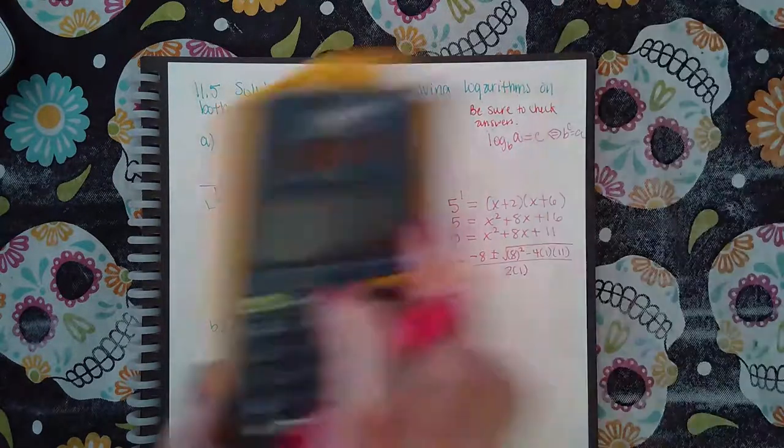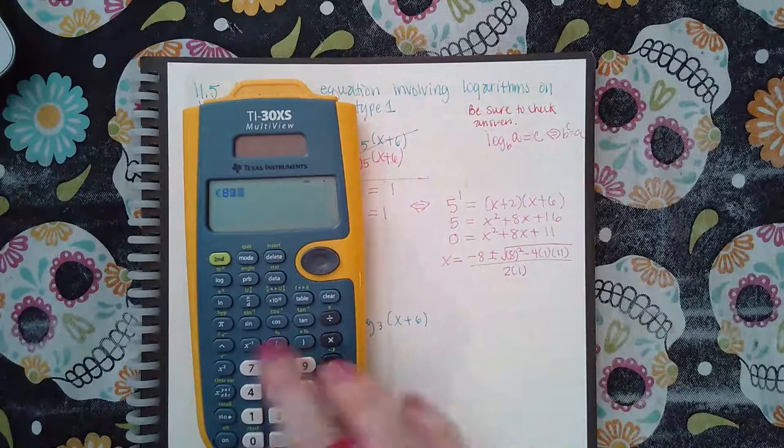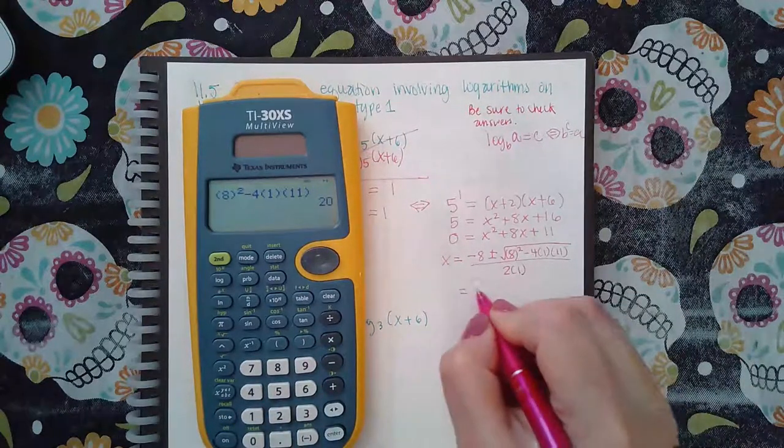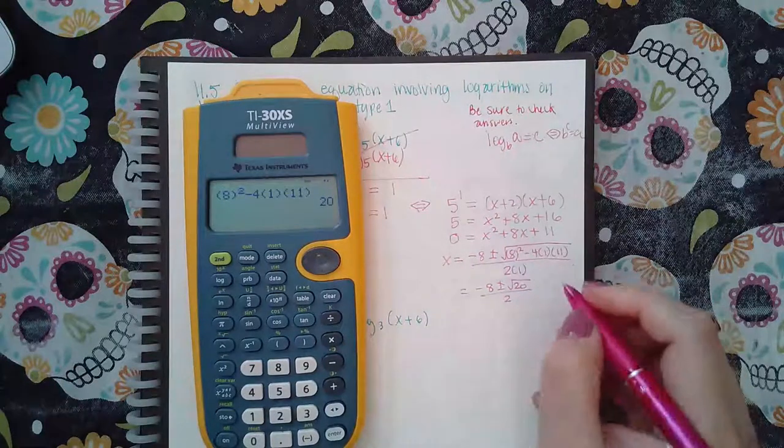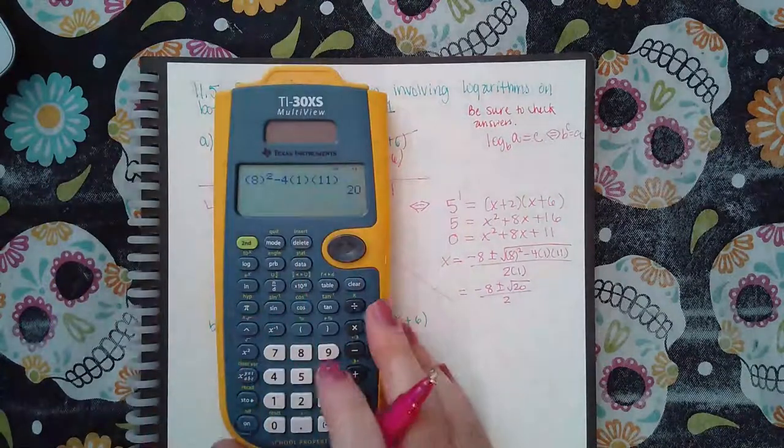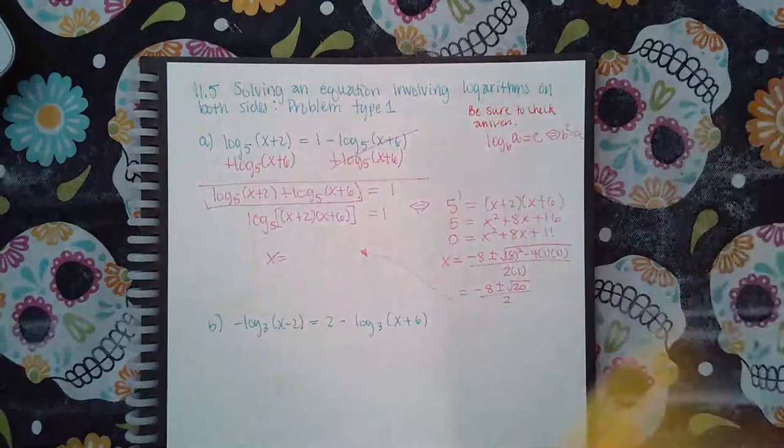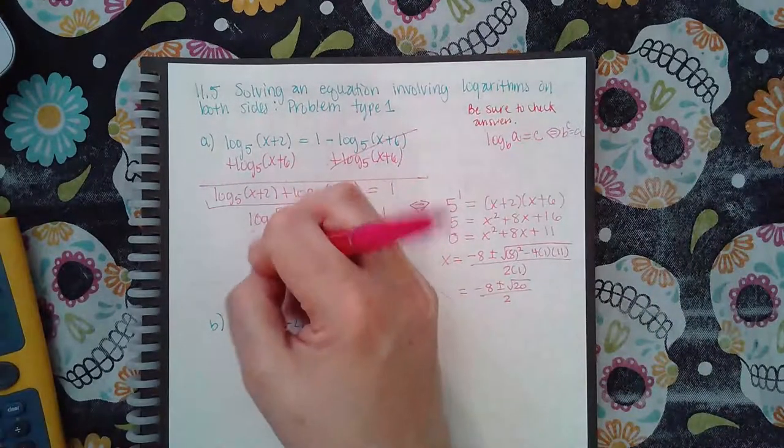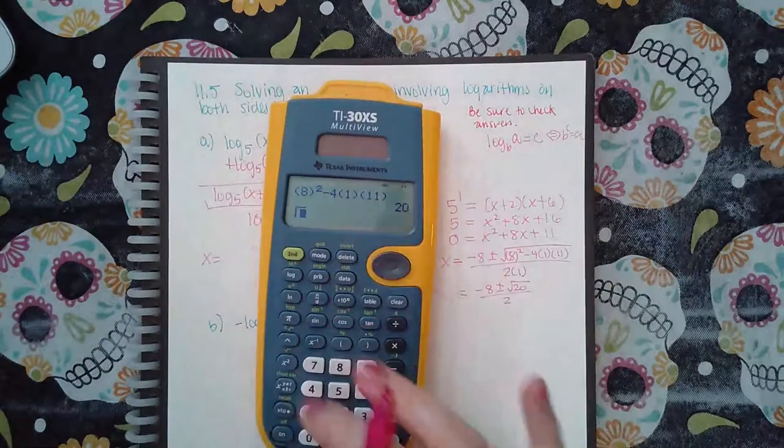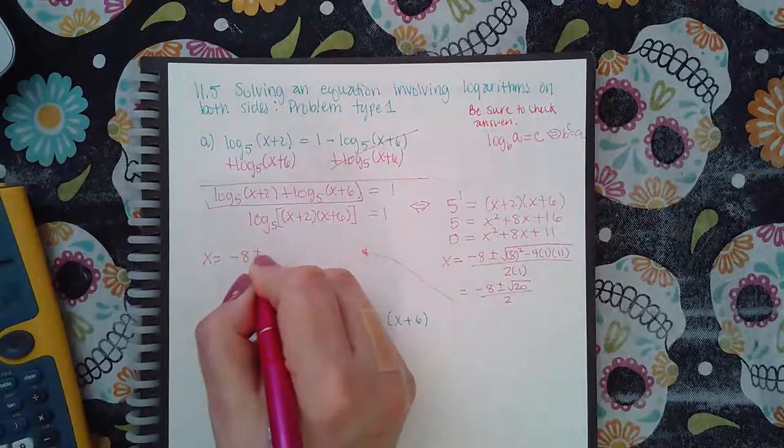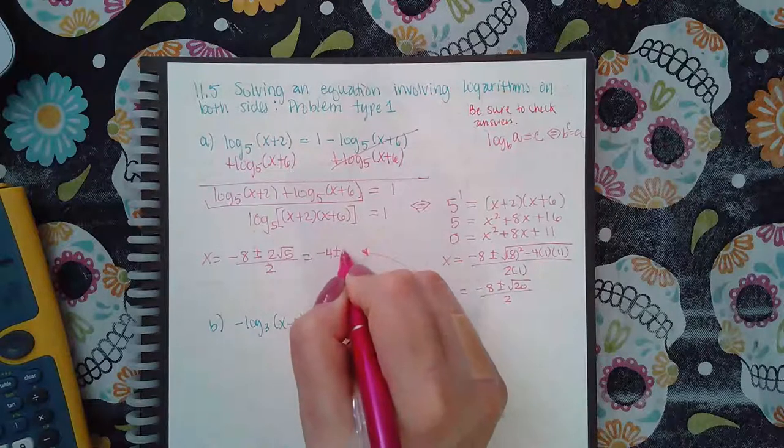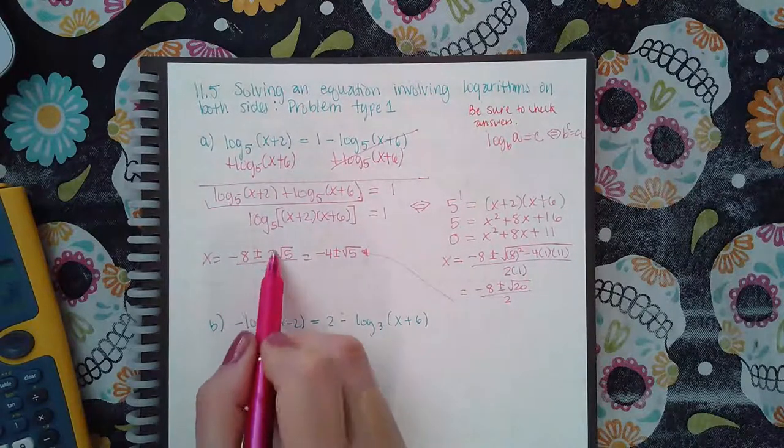And then let's see what we get. So eight squared minus four times one times eleven is twenty over two. And so then we get, I'm gonna come over here because I have some space. We get x equal to, square root of twenty does simplify into two square root of five. And then if I divide each term by two, I get negative four plus or minus square root of five, because this will reduce the two and that will reduce the two.